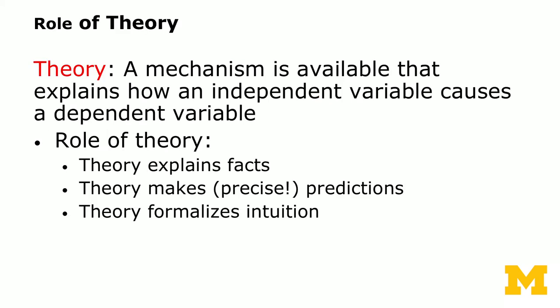The last part is the role of theory. A good theory — whether mathematical or not — provides a mechanism that explains how an independent variable causes a dependent variable. Theory explains facts, theory can make predictions that are often quite precise, and theory formalizes intuition.